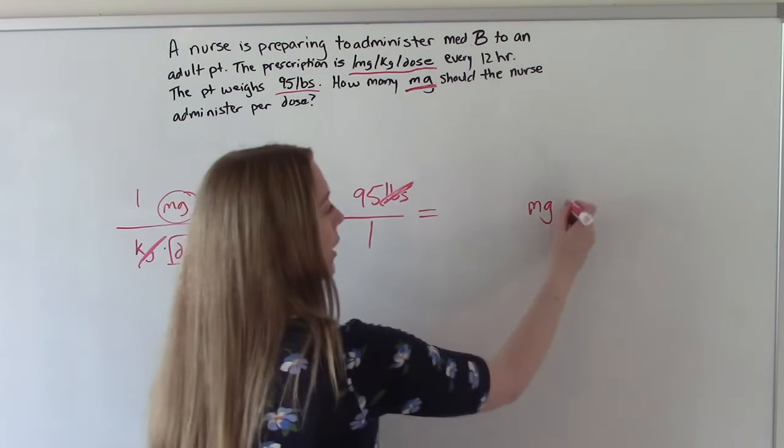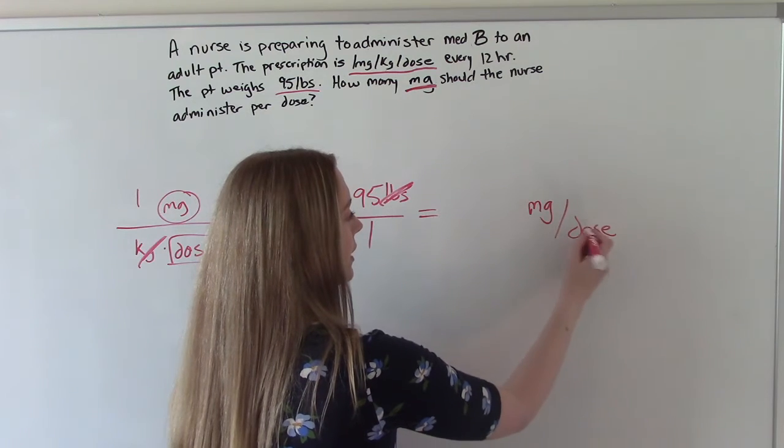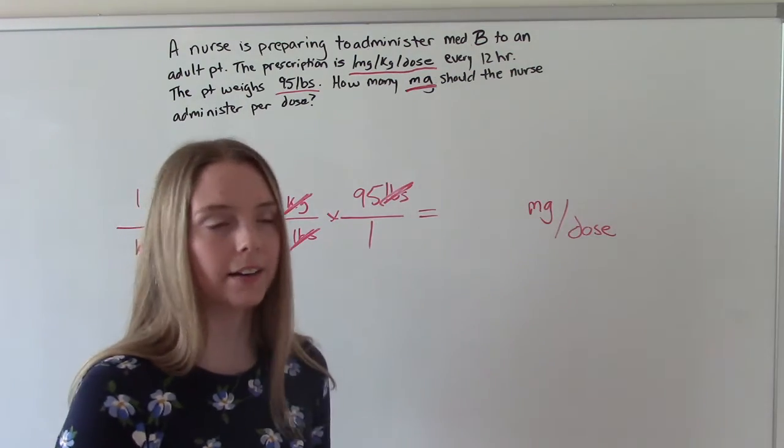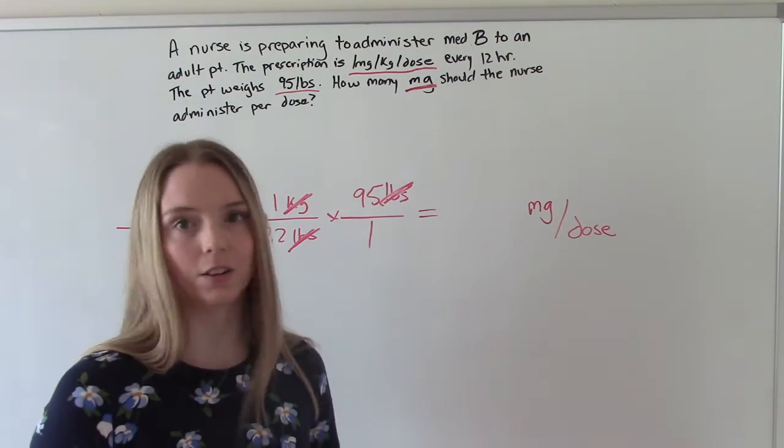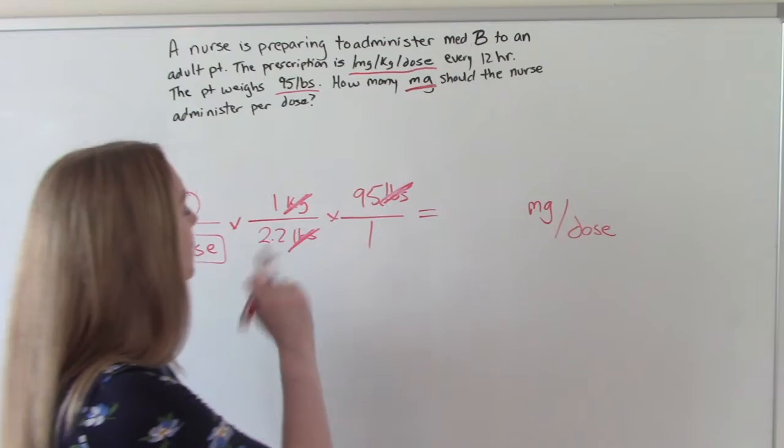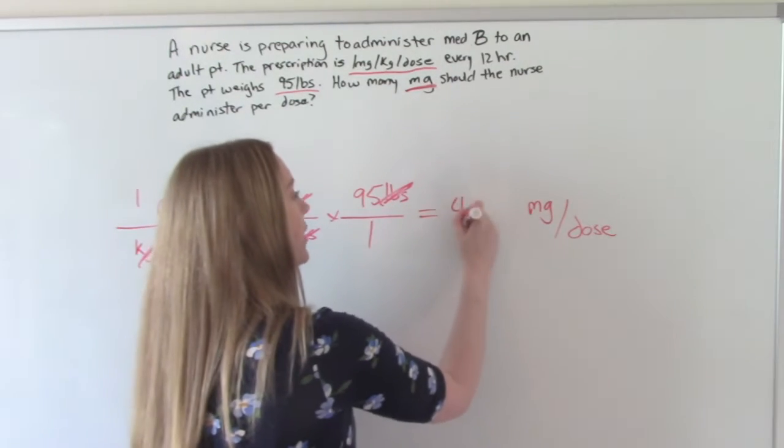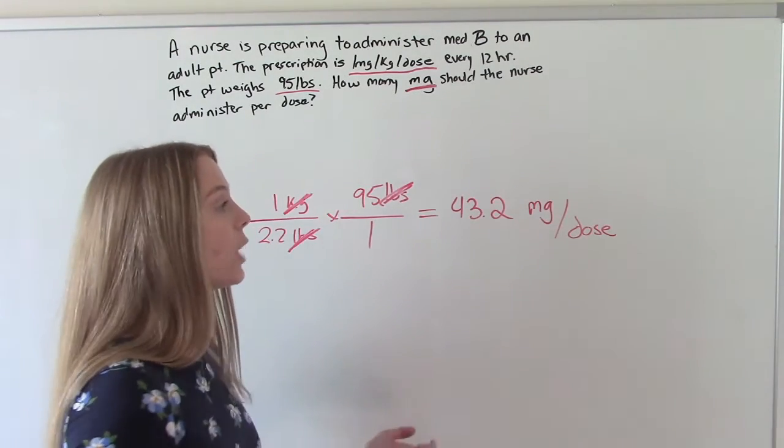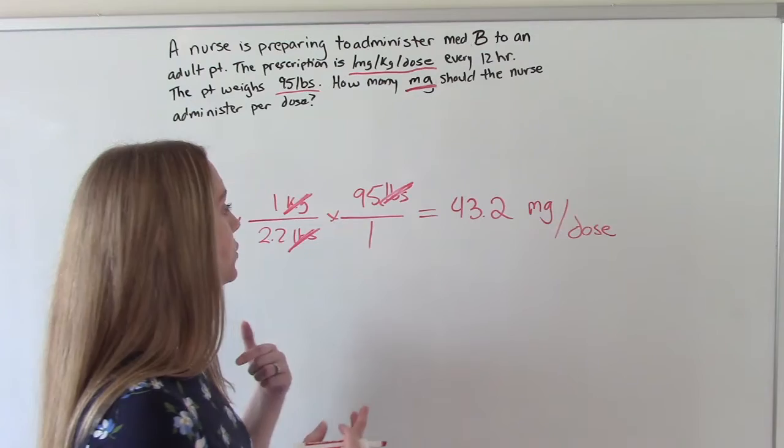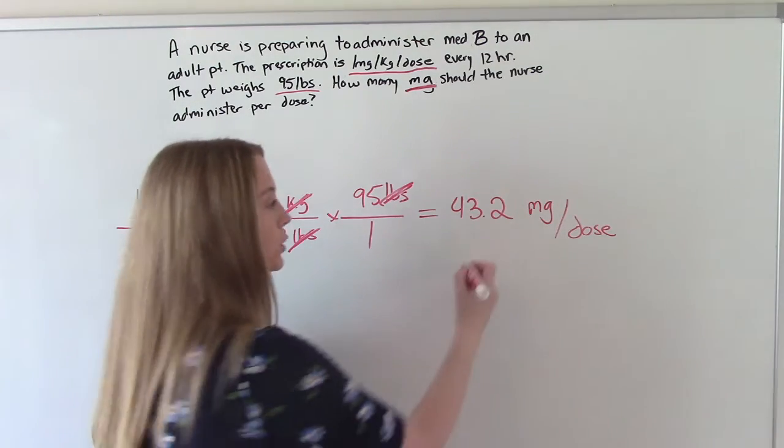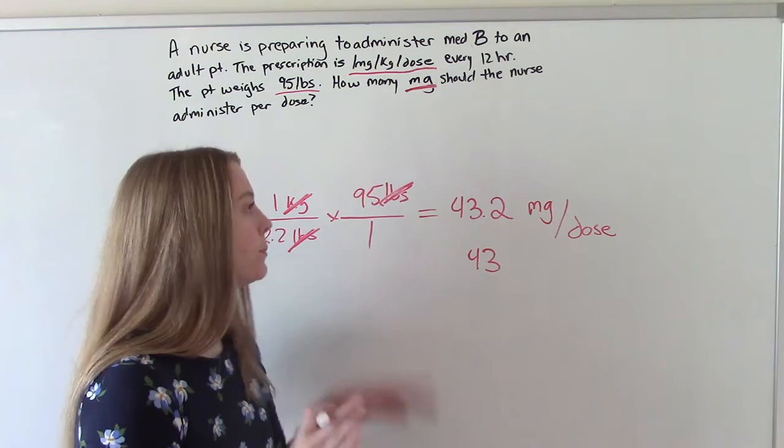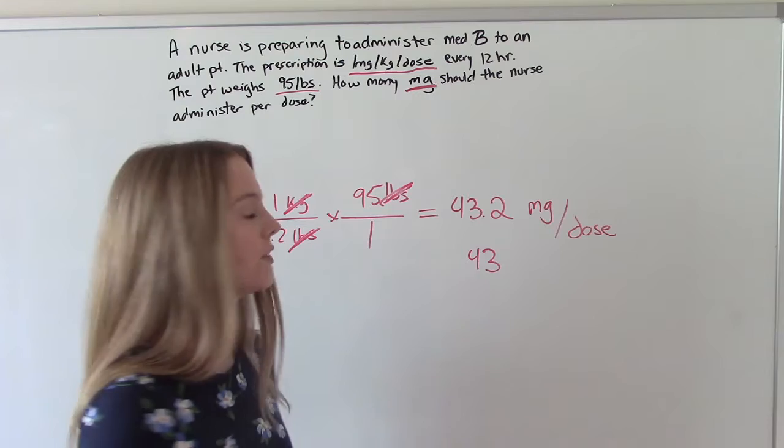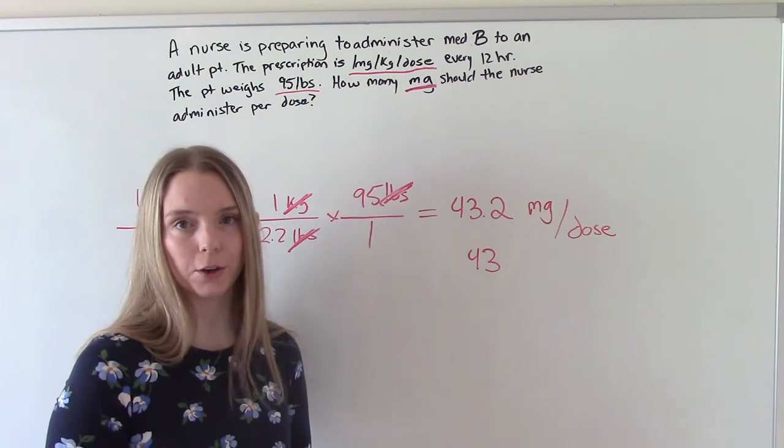Now if you want to put dose in your denominator here, you can, you don't technically have to, it's kind of just implied. But if you want to write it like this, that's also correct. So you'll punch it in, you'll do your math and you'll get 43.2. Depending on whether or not the question wants you to round, you'll get 43.2 or you'll just get 43. It'll tell you in the question if they want you to round or not. In this one we're just going to say no, it's fine. So we get 43.2 milligrams per dose.